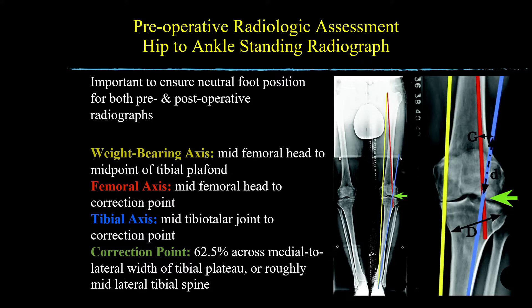Pre-operative standing hip-to-ankle radiographs are used in assessment of malalignment at the knee and allow the precise calculation for the correction required for HTO. Malalignment at the knee is defined as any deviation of the weight-bearing axis from the center point of the knee joint. Varus deformity is confirmed when the weight-bearing axis passes through the knee medial to the medial tibial spine. The image on the left is a standing hip-to-ankle radiograph. The radiologist typically determines the extent of varus or valgus deformity using the weight-bearing axis tangent, shown by the yellow line passing through the medial tibial joint line confirming varus deformity. The detailed image on the right illustrates the complex pre-operative technique for planning the size of the opening wedge to make the required correction.